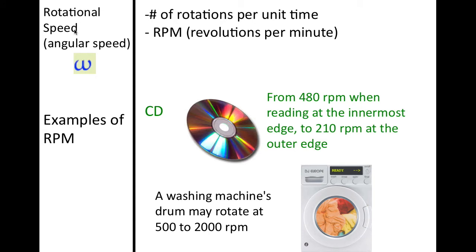Rotational speed is also known as angular speed, denoted by the symbol omega. It is the number of rotations per unit of time, or revolutions. RPM stands for revolutions per minute. For example, a CD can spin anywhere from 480 RPM at the innermost edge to 210 RPM at the outer edge. A washing machine can vary from 500 to 2000 RPMs depending on what cycle it's in.